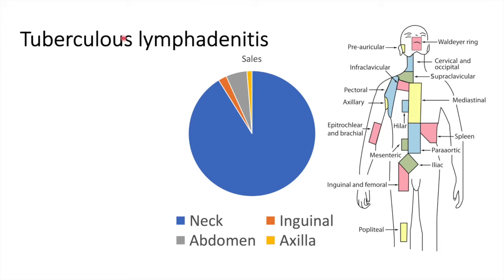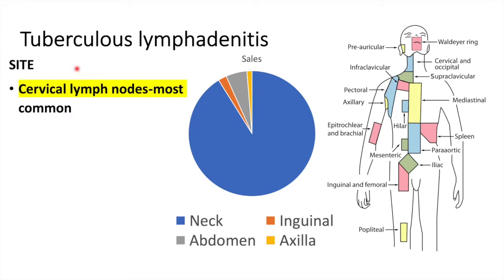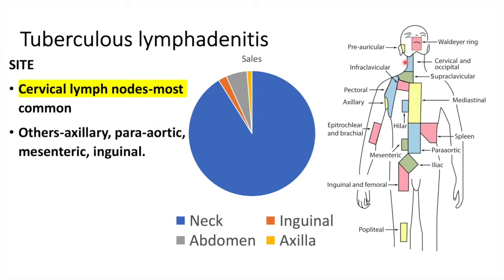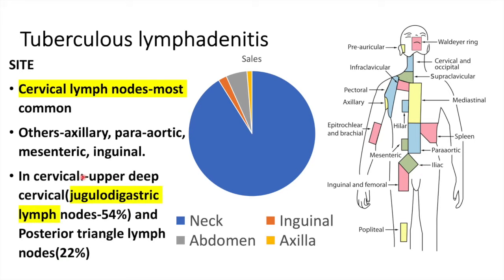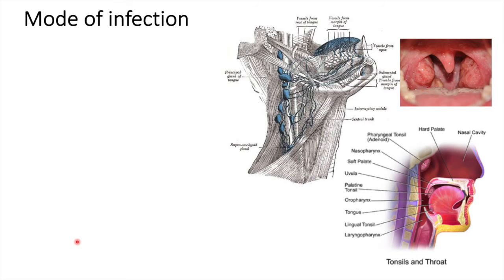In tuberculosis lymphadenitis, the most common site of infection is in the cervical lymph nodes, especially the upper deep cervical lymph nodes. Apart from that, it can also affect the axillary lymph nodes, the parotid, the mesenteric, and the inguinal lymph nodes. In the cervical region, the most common area of occurrence is in the upper deep cervical lymph nodes, especially the jugulodigastric lymph node and in the posterior triangle lymph nodes.